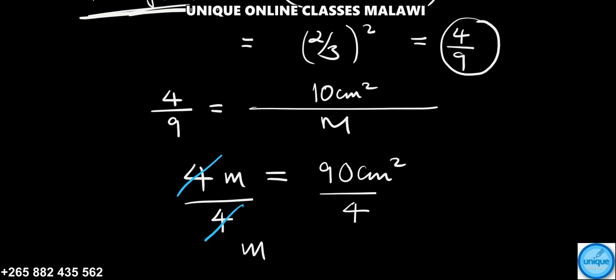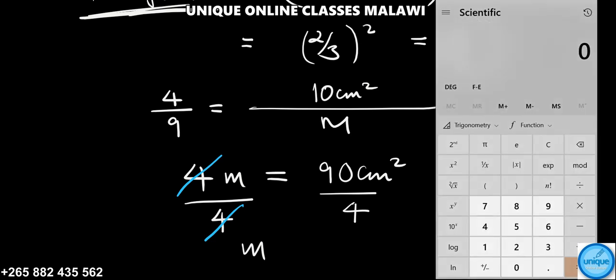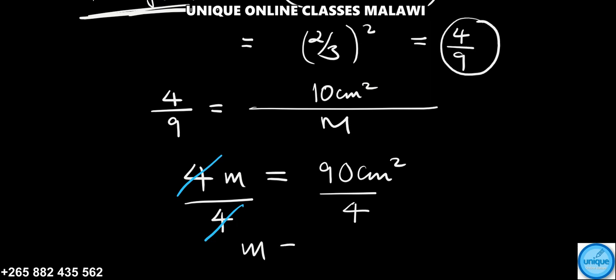Then next is to divide 90 by 4. The answer is 22.5. So you have here 22.5 cm squared. This one is representing the area of the bigger triangle. That's how I can do it.